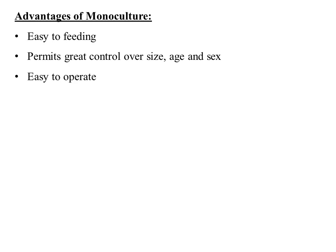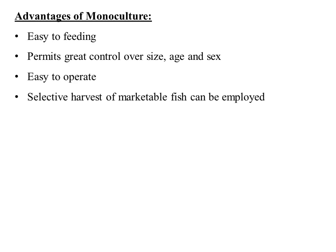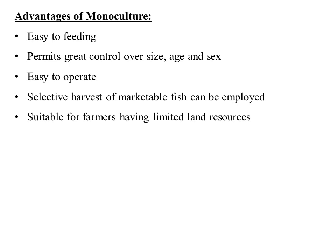The advantages of monoculture include: it is easy to feed the organisms, and it permits great control over the size, age, and sex of the organisms to be cultured. It is easy to operate, selective harvesting of marketable fishes can be employed, and it is also suitable for farmers who have a very limited amount of land resources.